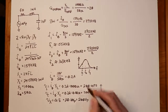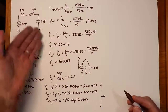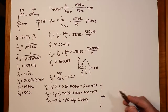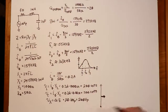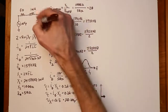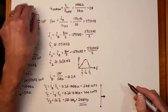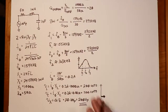A circuit like this is easy to build in the lab — 50-ohm resistor, 1 millihenry, 1 nanofarad, 10 volts from a function generator — no big deal. However, it's potentially dangerous: 200 volts sitting across one of those reactive components. You don't want to be sticking your fingers in there; you should never do that.